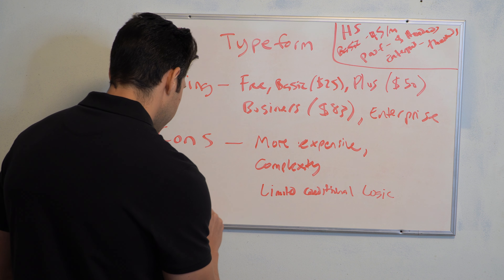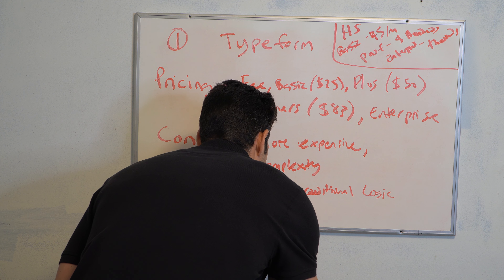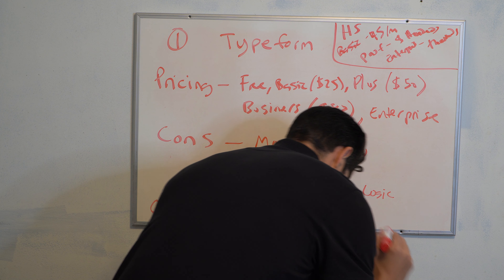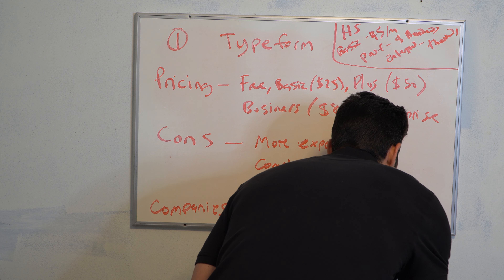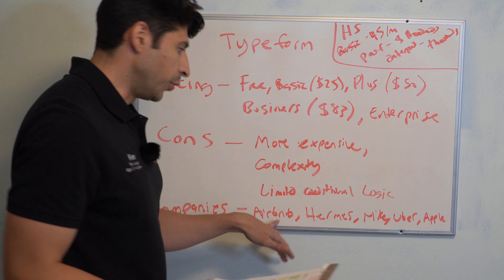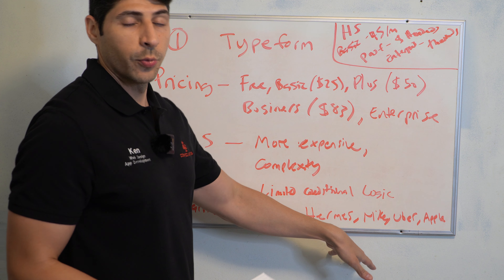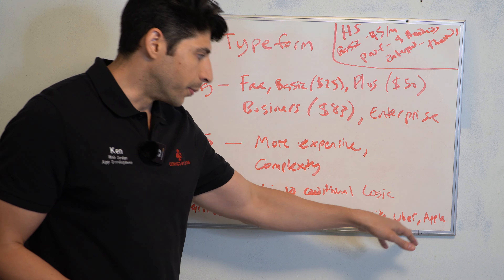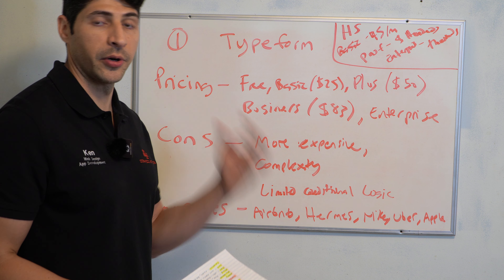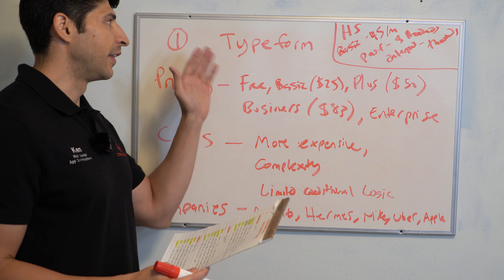Some companies that use Typeform include Airbnb, Hermes, Nike, Uber, and Apple. A lot of huge companies use Typeform. These brands also focus more on user experience and conversation over just a simple direct lead form, which is why they like the way Typeform works. So if Apple and Uber and Nike can use them, I think it's worth giving a shot.